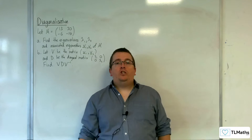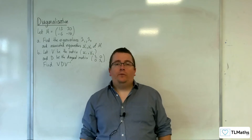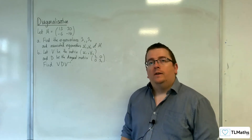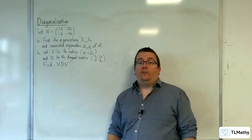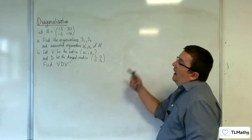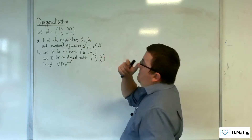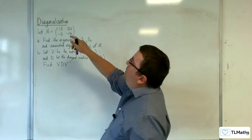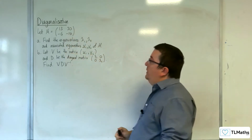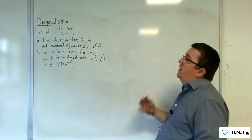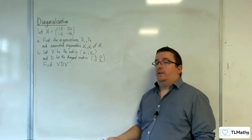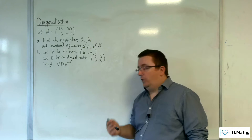In this video I'm going to be introducing the process of diagonalisation. The best way to do this is really via an example. So we're going to let M be the 2 by 2 matrix: 13, 30, minus 6, minus 14. The first job is to find the eigenvalues and associated eigenvectors of M.